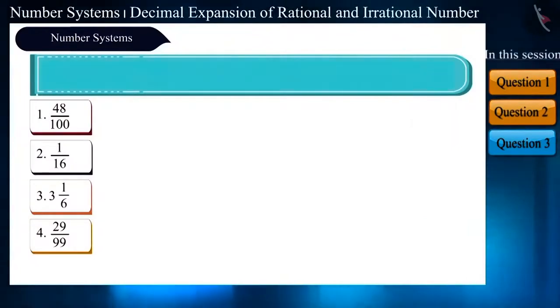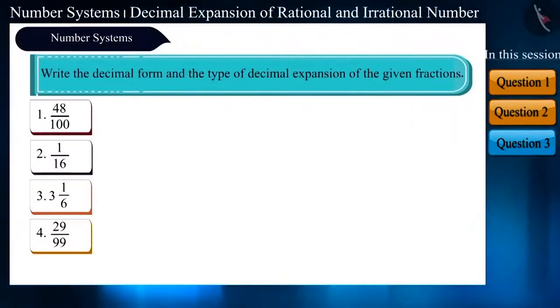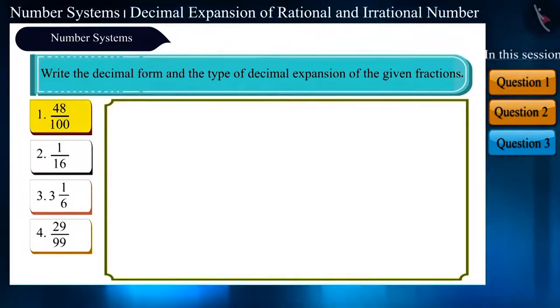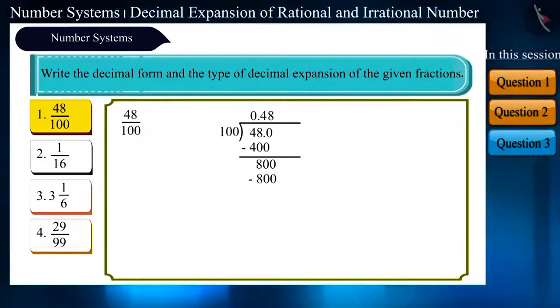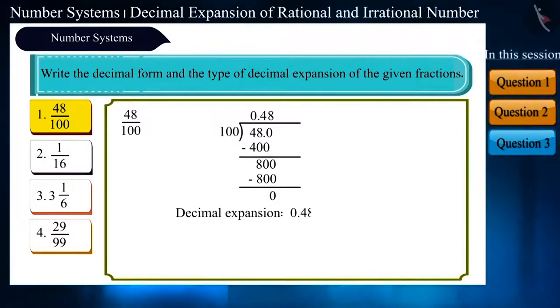Friends, let us see this question. Write the given fractions in their decimal form, their decimal expansion. First fraction is 48 by 100. We will write it in this way and solve it using the long division method. Here, the remainder becomes 0 and its decimal expansion is 0.48. Therefore, it is a terminating decimal expansion.